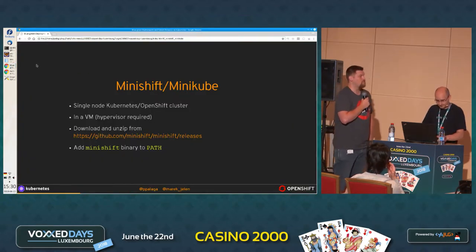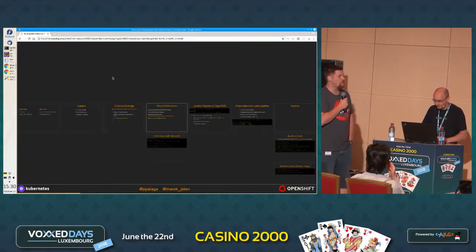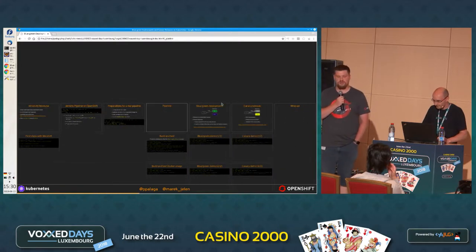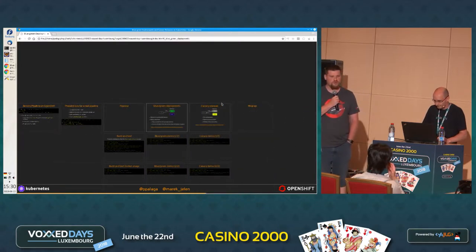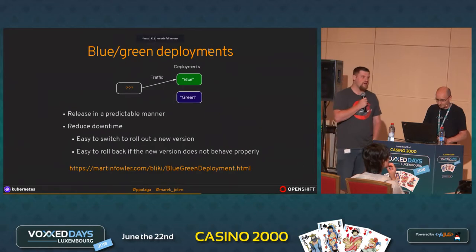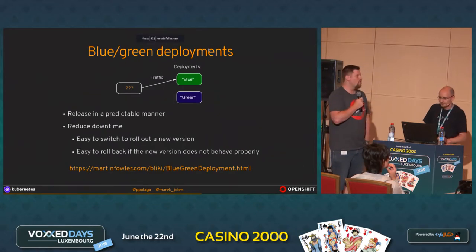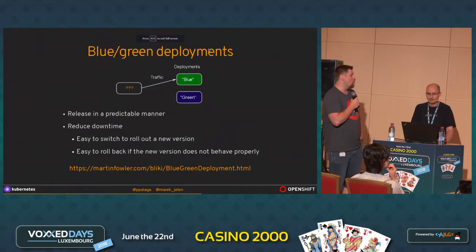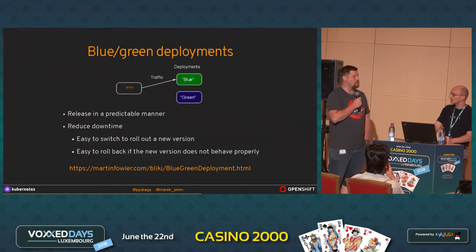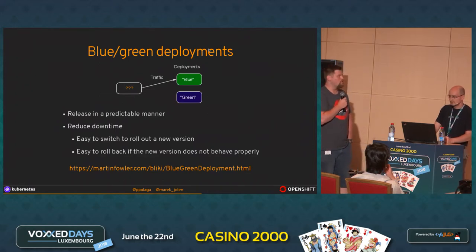So there are different ways to do that. The basic one is blue-green deployment. Essentially, what we do is spin up a new version of the application alongside the old one, and we wait if everything's fine. Then we just switch to the new one.